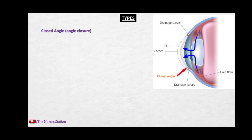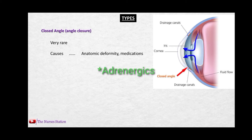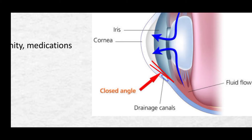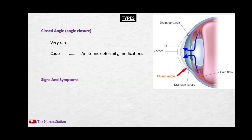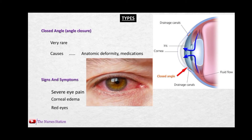The next type is closed angle, or angle closure, glaucoma. It is a very rare condition, and causes include anatomic deformity or the use of certain medications. As you can see, the angle between the cornea and the iris has decreased, resulting in blockage of the drainage canals and preventing the aqueous humor from draining out. Signs and symptoms include severe eye pain, corneal edema due to extra fluid, red eyes, and nausea and vomiting.